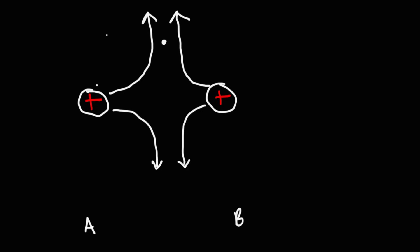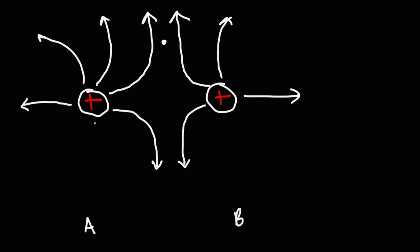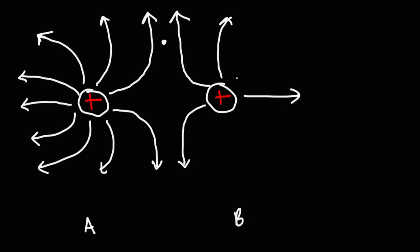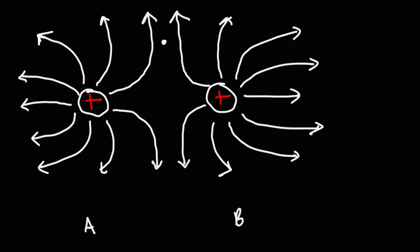So completing the diagram: the field lines bend away from both positive charges and the pattern is symmetrical relative to the center. That's how you draw the electric field lines for two positive charges of equal magnitude QA = QB.